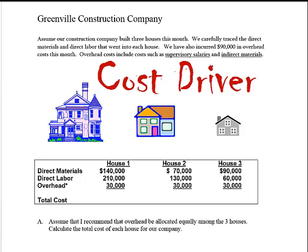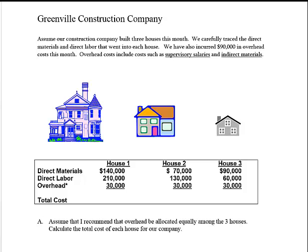What drives the cost of indirect materials? Well, maybe the more direct materials you use, also the more indirect materials you use. So the proposal is: add up the direct materials and direct labor for each house to get a total for all three houses, then look at what fraction of that total went into each house. Adding up direct materials and direct labor for all three houses together, you get $700,000.